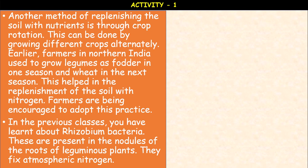You have studied in previous classes about rhizobium bacteria, which are present in the nodules on roots of leguminous plants. These bacteria fix atmospheric nitrogen. They develop root nodules and live in a symbiotic association with legume plant roots. The nitrogen so fixed can be used by plants from the soil. The process of converting atmospheric nitrogen into compounds usable by plants is called nitrogen fixation.